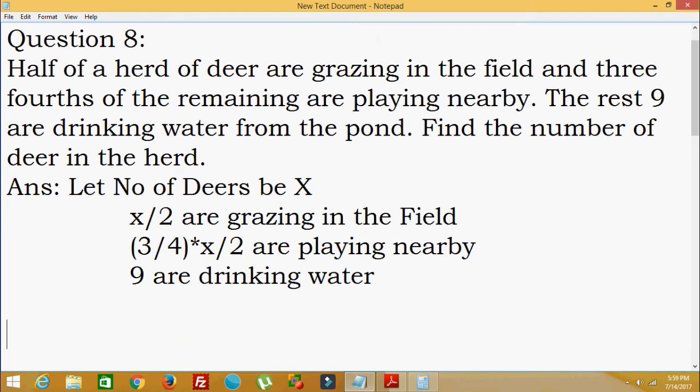Now we will write the equation. Total: x/2 plus three-fourths of x/2 plus 9, all summed, will equal x, the total number of deer.